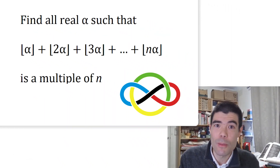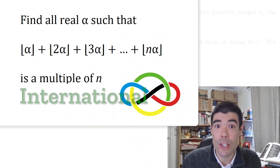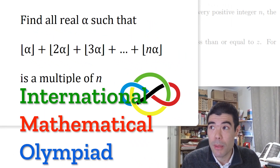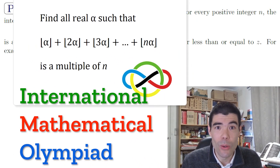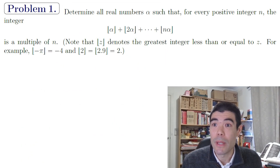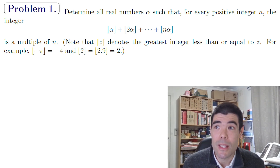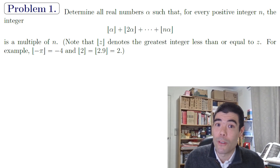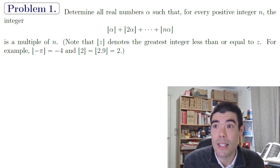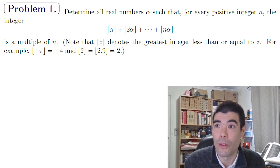Here we have Problem 1 from the 2024 IMO International Math Olympiad. Like all the IMO problems, it's a really nice problem. Being problem one, it's more accessible than the other problems, but it is going to take a bit of time, concentration, and determination to stick with it and follow the problem through.